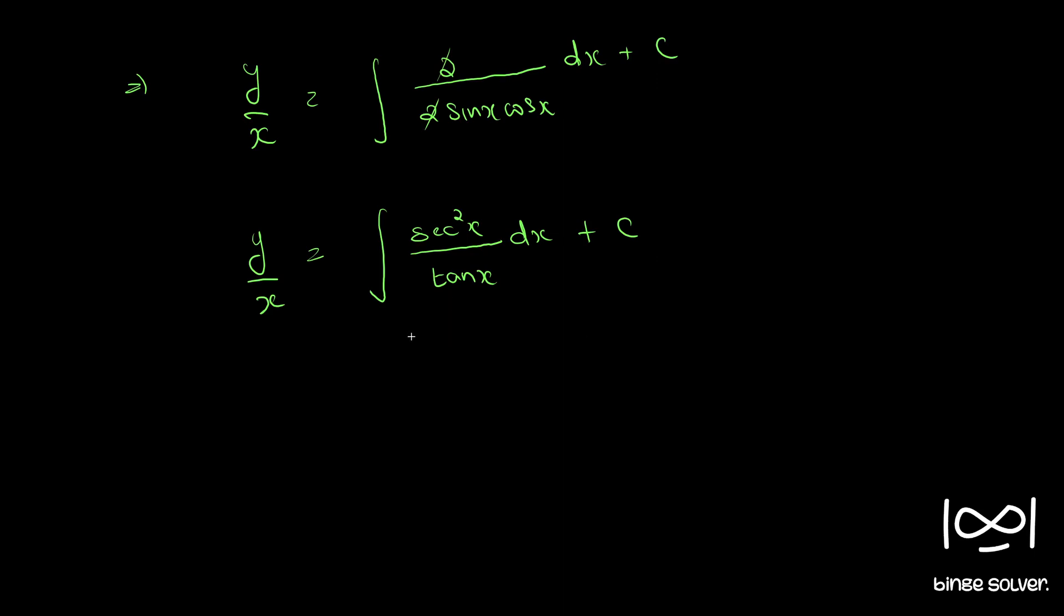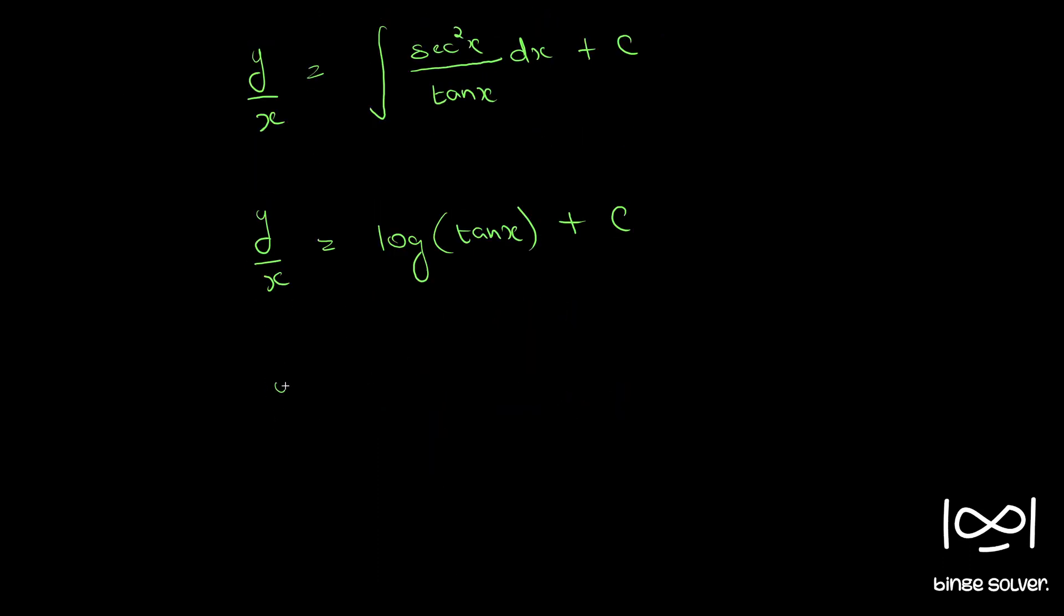Now differential of tan x is secant square x. So we can write the integral of this is log tan x plus c. So if you multiply throughout by x we have y equals cx plus x log tan x. So this is the final solution.